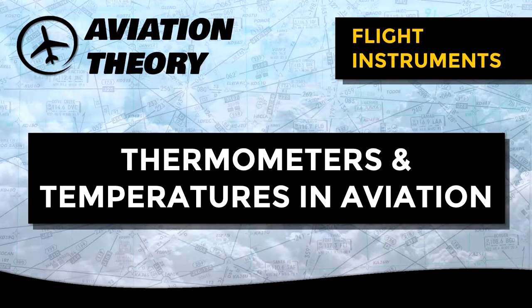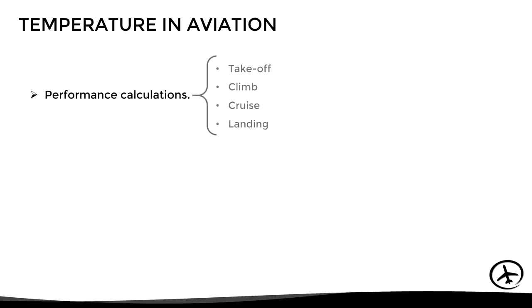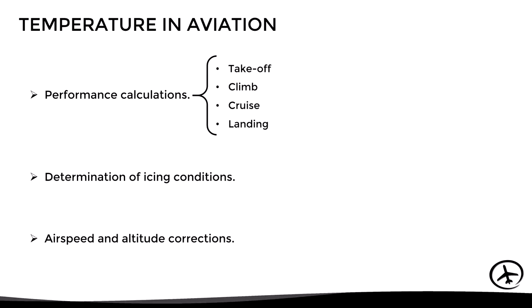Today we will talk about the thermometers and the temperatures used in aviation. First, let's look at why temperature is important. Knowing the current air temperature is essential for performance calculations of the different phases of flight, from takeoff to landing, as it greatly affects air density. Temperature is also useful in determining icing conditions, which is very important since ice formation has negative effects on the aerodynamic and performance characteristics of the aircraft, such as increased drag, reduced lift, and increased weight. Finally, temperature is also used to make altitude and airspeed corrections, thus obtaining the true airspeed and true altitude. Now let's take a closer look at the instrument used to measure it, which is the thermometer.